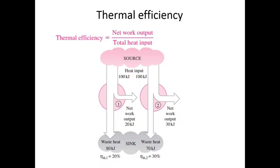Thermal efficiency is the ratio of net work output to total heat input — efficiency equals output divided by input. Consider two different heat engines, number one and two, connected to a single source of 100 kilojoules of input energy. We want to find how much percentage of heat is utilized as useful work.